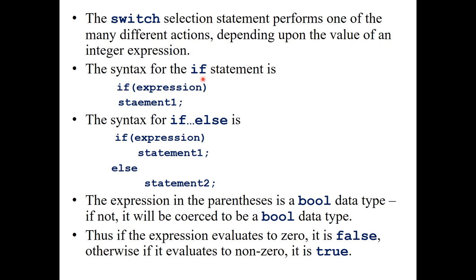For the syntax of the if statement: after if, in parentheses you put the expression — if this expression is true, statement one will be carried out; otherwise it will be skipped. For if-else: if the expression is true, execute statement one; else execute statement two. The expression in parentheses is a Boolean data type — it will evaluate to either true or false. If it is not a Boolean data type, it will be coerced via data type conversion. If the expression evaluates to zero, it is considered false; if it evaluates to non-zero, it is considered true.